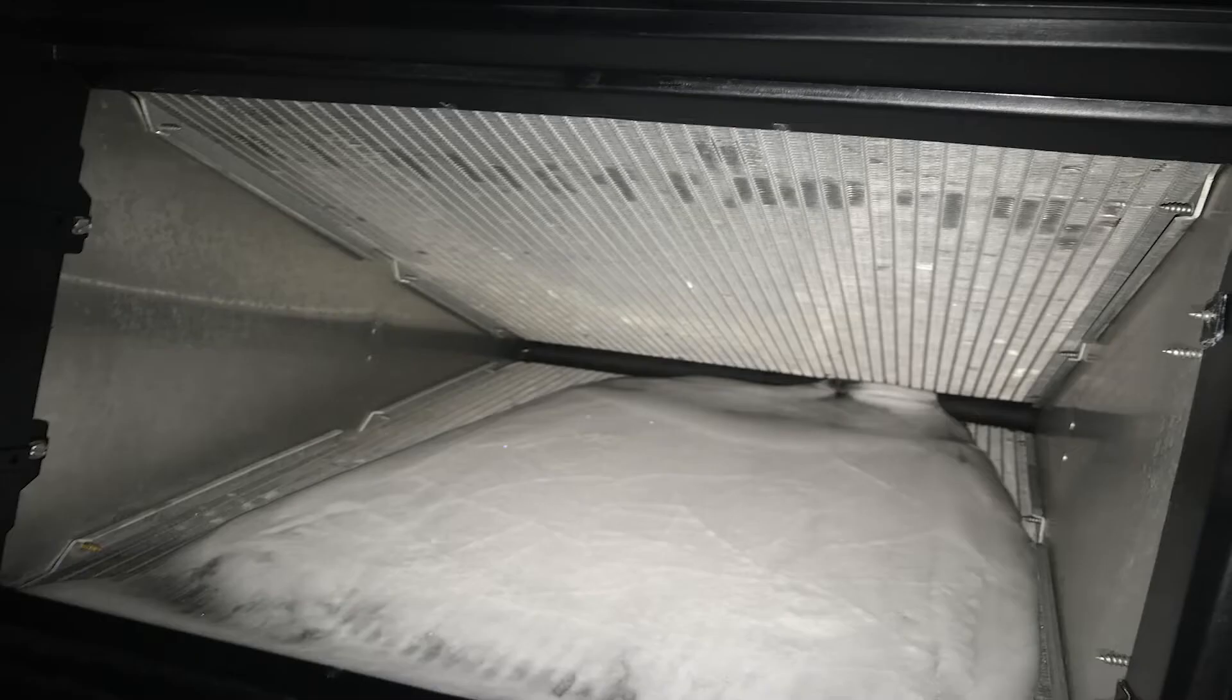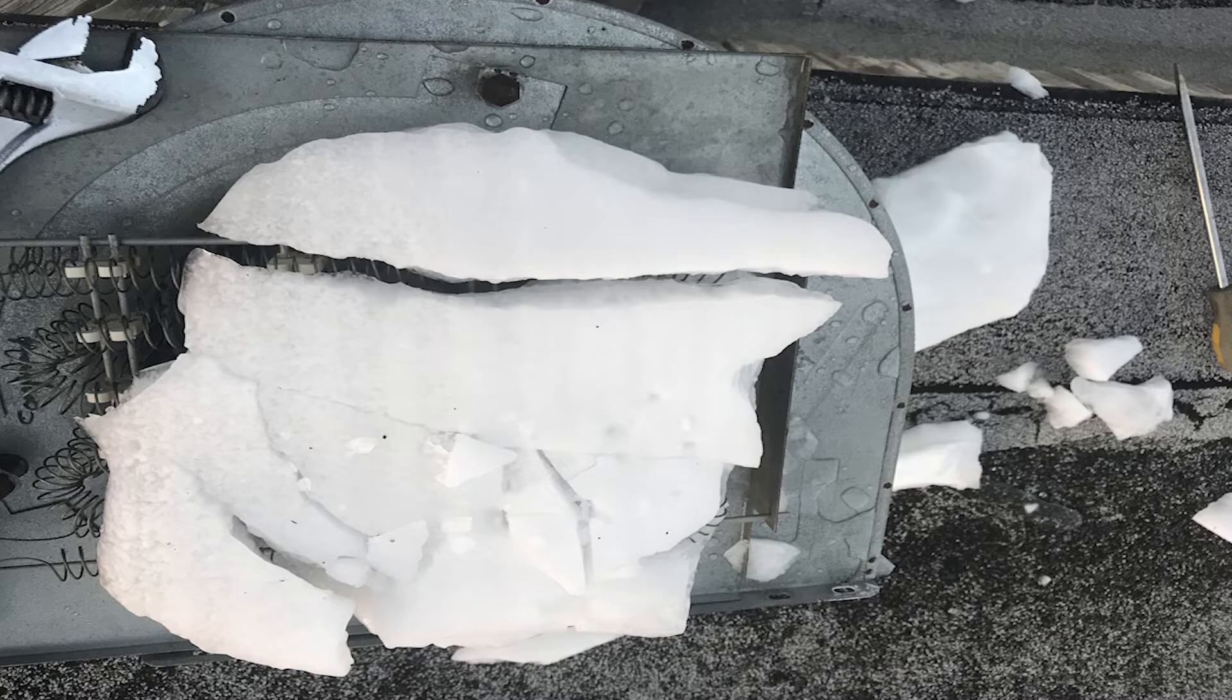Instead of the air condensing on that coil as water, it starts to condense there as ice. It starts to build up ice because that coil is so cold, either because of a lack of airflow or a lack of refrigerant. The pressure is much lower because there's no refrigerant in there, and so the temperature also gets a lot colder, and it starts to condense as ice on your coil.